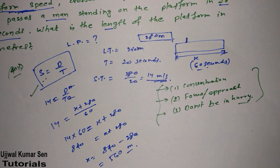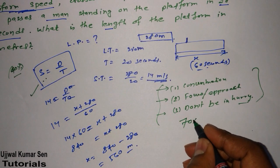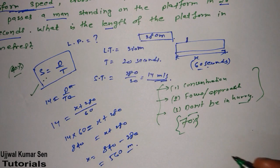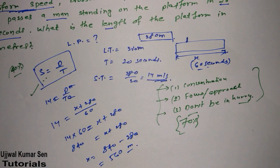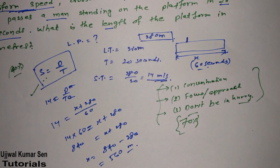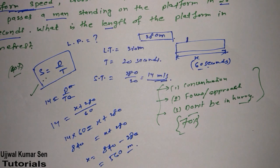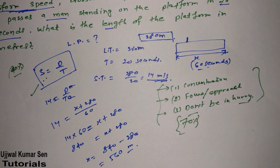If you know the basics, you can solve 70% of GATE questions and get a rank of 200–300, which is great. Don't try to solve every single question — focus on questions where you can maintain accuracy, because without accuracy you cannot score well in GATE.